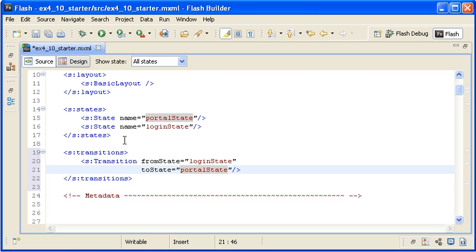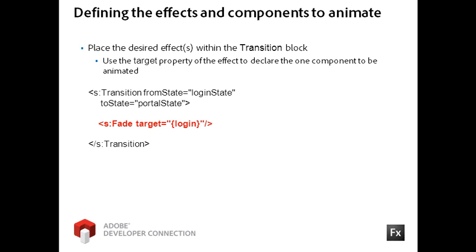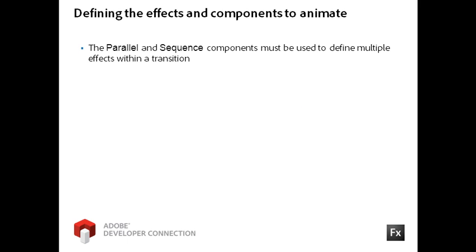I will create an animation for the reverse transition later. To define the components you want to animate and how they will move, you define the effects within the transition instance. The rules for using effects are the same as you learned in the last video and exercise. Remember that you used the target property with the binding syntax to reference the ID property of the component you want to animate. You used the Targets property with the array bracket syntax for the binding to declare multiple components for the effect. You can also use the Parallel and Sequence composite effects to group two or more effects to play in Parallel or in Sequence, respectively.